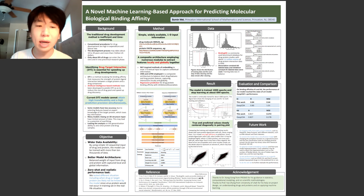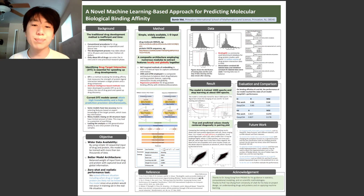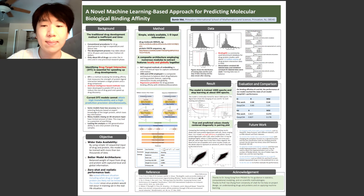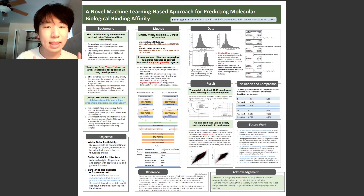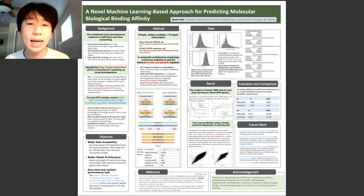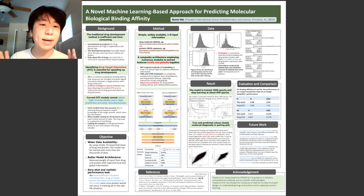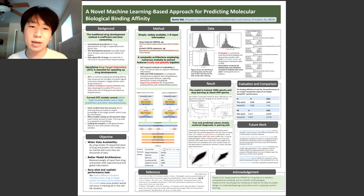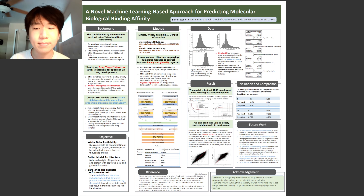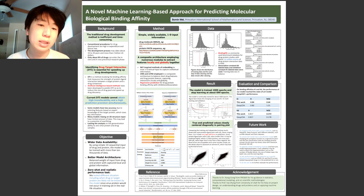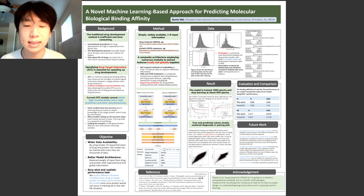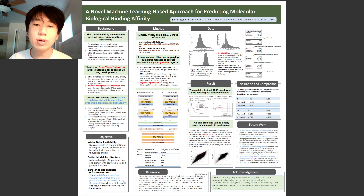In my research, DTI — drug-target interaction — is an important concept. This process first screens existing drugs for better candidates for a new cure. The mechanism is to train a computational model to predict the binding affinity between a drug molecule and its target protein. Drugs with stronger binding affinity have a greater probability of being effective on the disease, and this can greatly reduce time and financial cost.